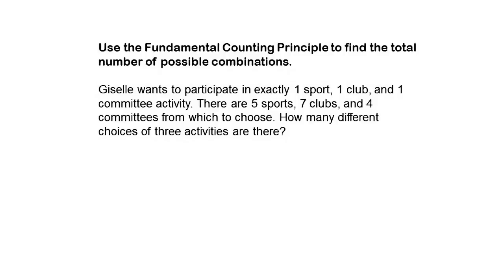The easiest way to explain this is we multiply the number of ways in each category to get the possible ways of those events happening together. It's an easier method to figure out all possible outcomes instead of creating the sample space by making a tree diagram, a table, or a list.